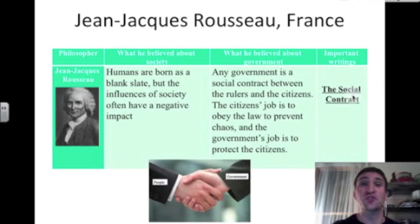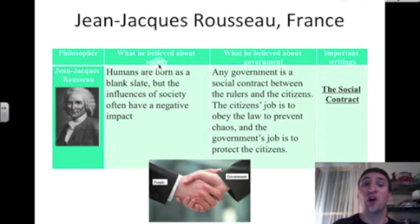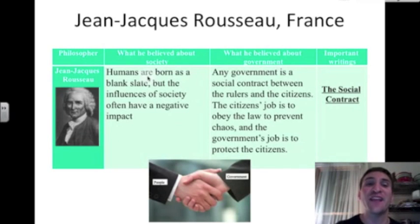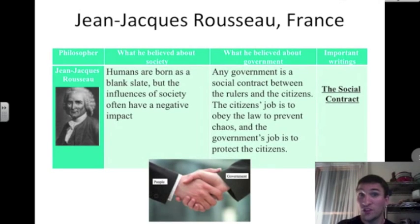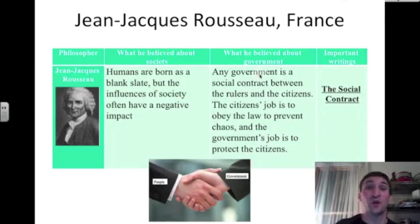Jean-Jacques Rousseau is our next philosopher from France, shown here with the fashionable French wig of the day. Rousseau believed that humans are born as a blank slate, but the influences of society often have a negative impact on a person. He believed that any kind of government is a social contract between the rulers and the citizens — the citizen's job is to obey the law to prevent chaos, and the government's job is to protect its citizens. Rousseau's most famous writing was called The Social Contract.